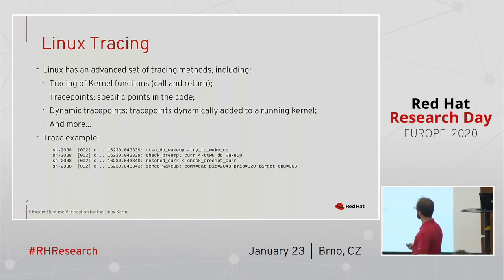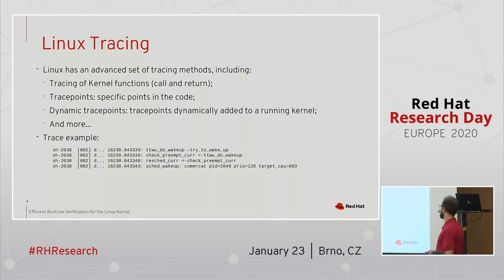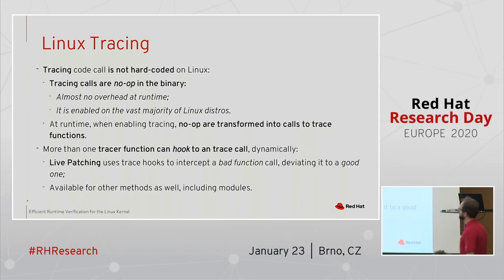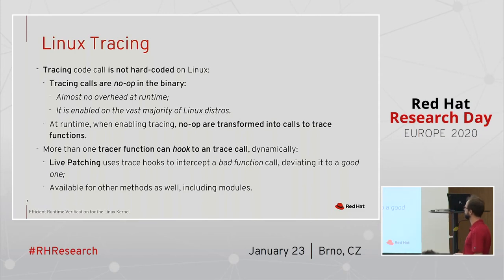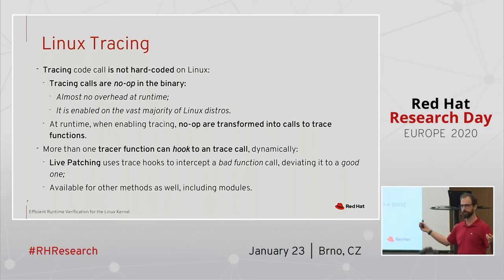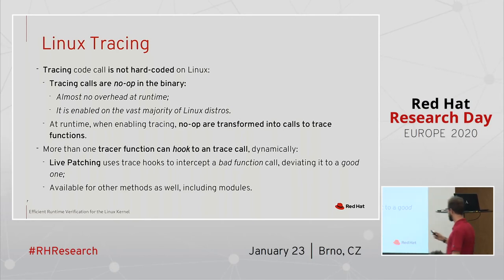Linux has a very advanced set of tracing methods. We have a function tracer that can trace almost all functions, and we have trace points — we can even dynamically create trace points during runtime. One good thing about tracing is that it's not hard to decode the binary. Initially, it's no-operations, so we can have almost no overhead while running the kernel, with the option of enabling it. When we enable trace, we translate the no-ops into calls to the functions we want to run while tracing. It was initially written to call tracers, but we can hook any function to that — it has been used creatively for live patching, and here I'm using it for verification.